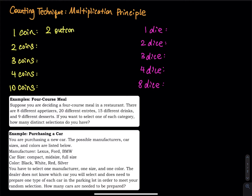What if you flip two coins? There are supposed to be four outcomes in the sample space. How do I get four? The first coin has two faces, the second coin has two faces, and two times two is equal to four outcomes.